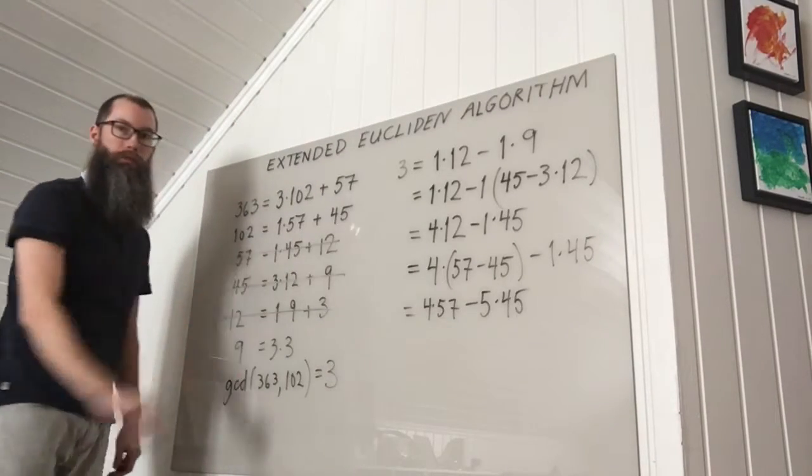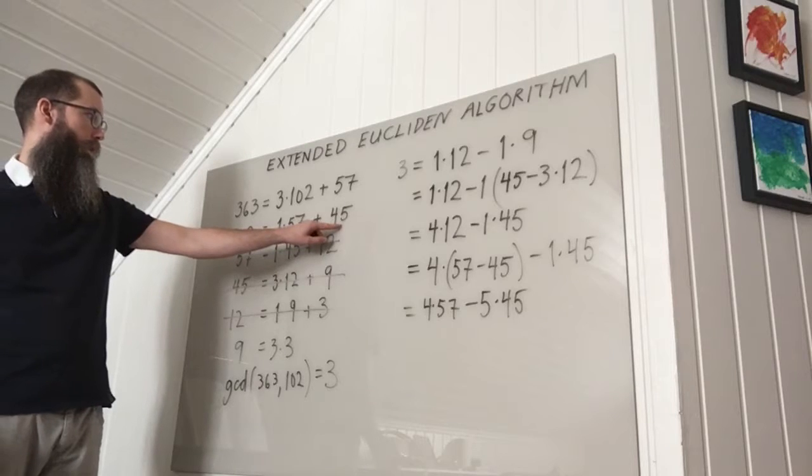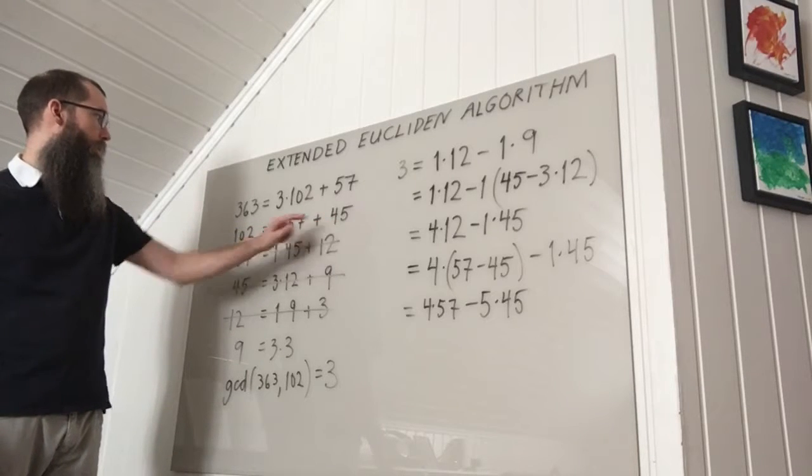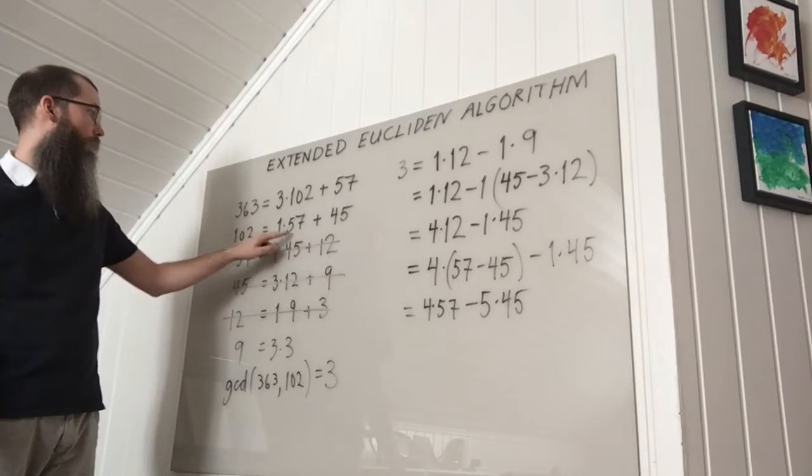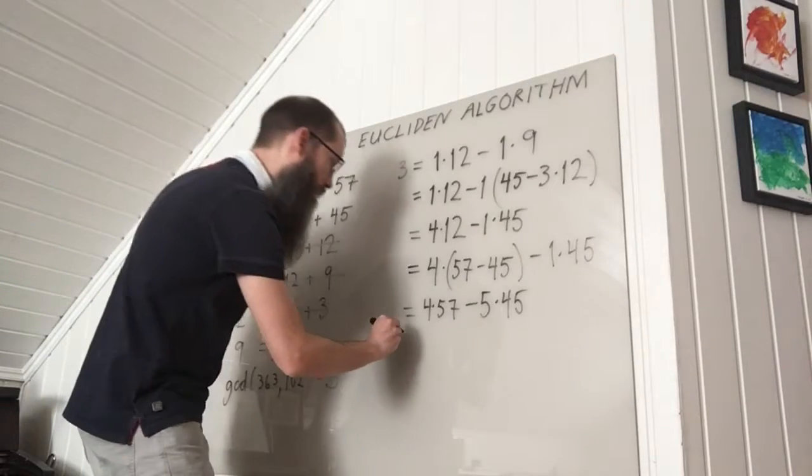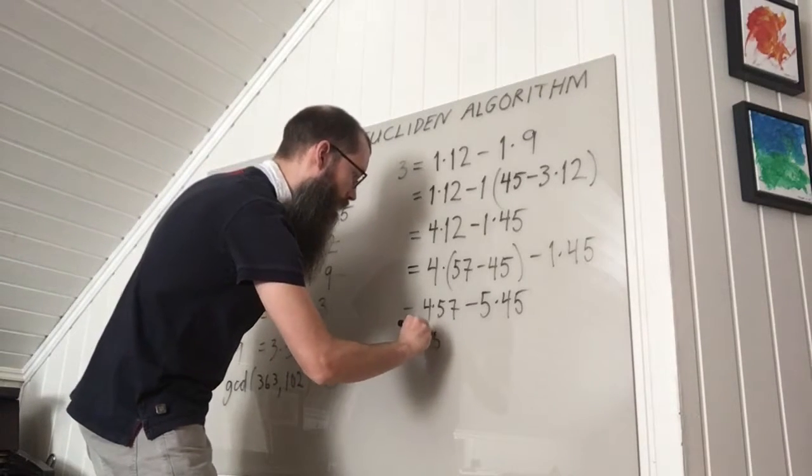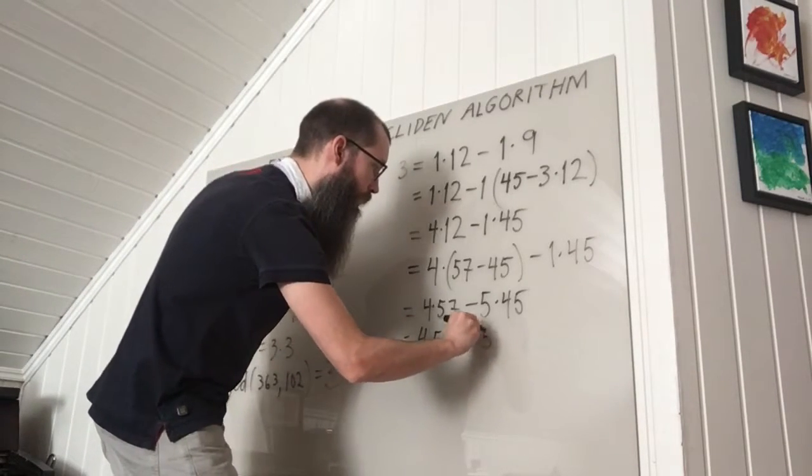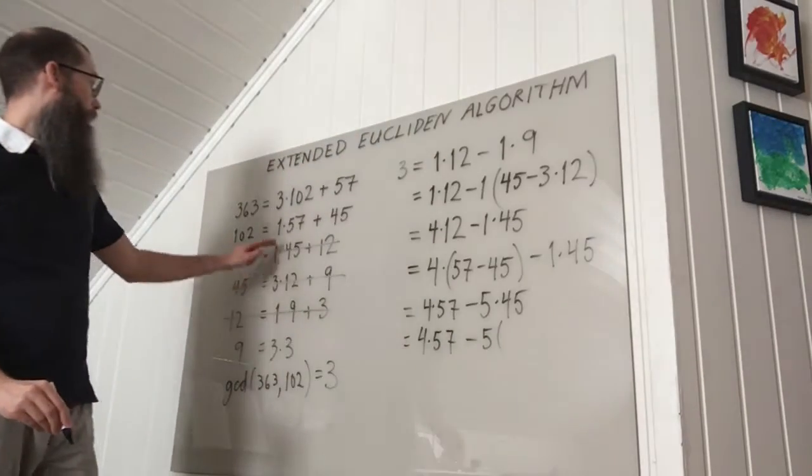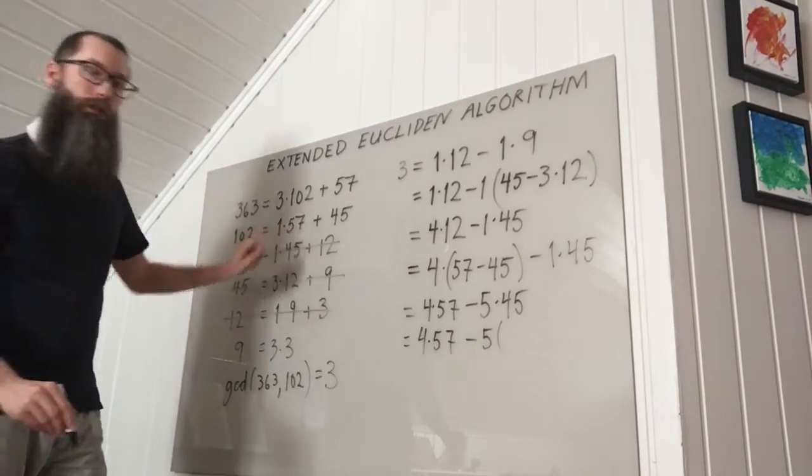I'm done with this line. And then I go to the line above and express 45 as a combination of 102 and 57. So I get 4 times 57 minus 5 times 102 minus 57.